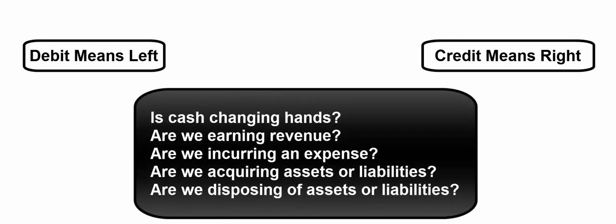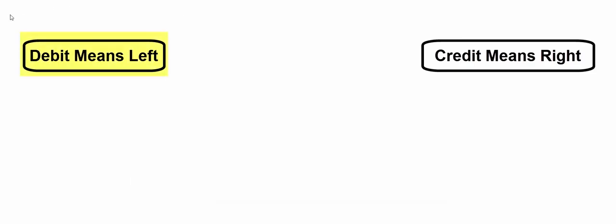In step one, we analyze the transaction. Is there something to record? Is cash changing hands? Are we earning revenue or incurring expenses? Are we acquiring or selling assets with or without cash? Any of those transactions are going to require a journal entry — and that means debits and credits.